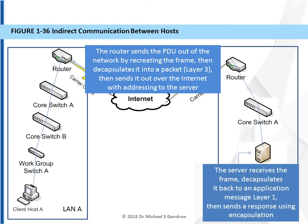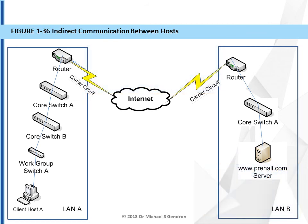When that LAN receives the frame, it then sends it through its network by propagating it over its media. It then decapsulates that message and gets it all the way back up to layer one within the server on its local network. So we have indirect communication between client host A and www.prenhall.com in that the two hosts are not directly connected. They are communicating indirectly through layered or encapsulated communication, with a number of switches, routers, and the internet in between enabling that indirect communication.